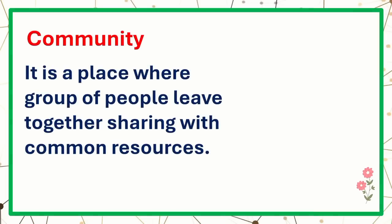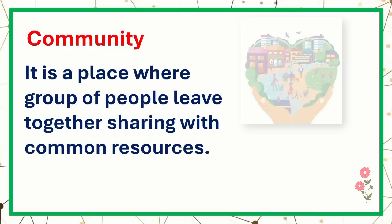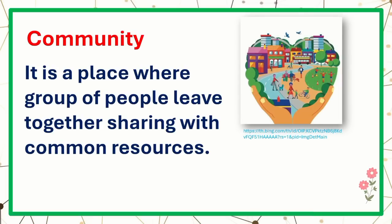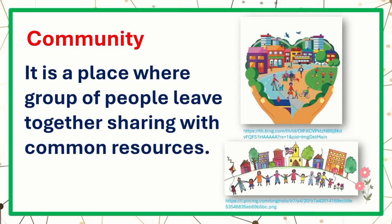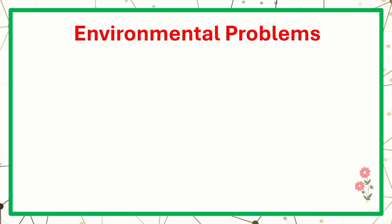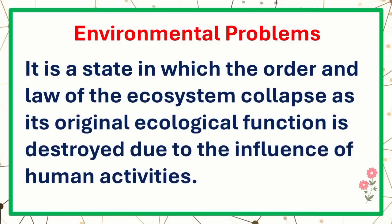Community — it is a place where a group of people live together and share common resources. Environmental problems — it is a state in which the order and law of the ecosystem collapse as its original ecological function is destroyed due to the influence of human activities.